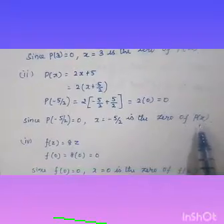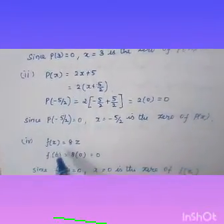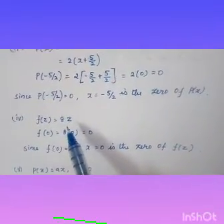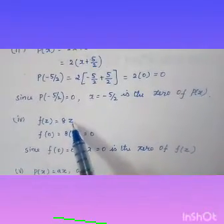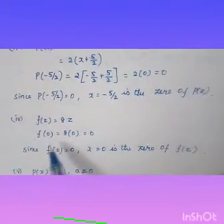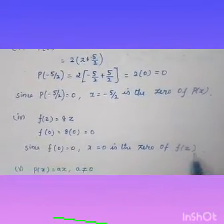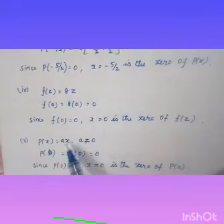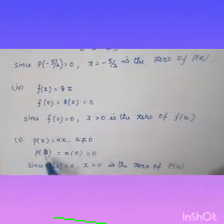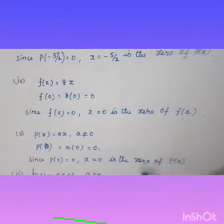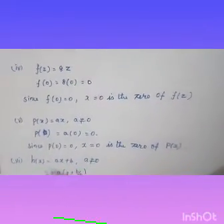Fourth problem: f of z equals 8 into z. For the product to be zero, we substitute z equals 0, giving 8 into 0 equals 0. So z equals 0 is the zero of f of z. Fifth problem: p of x equals a into x. Similarly, p of 0 equals a into 0 equals 0, so x equals 0 is the zero of p of x.